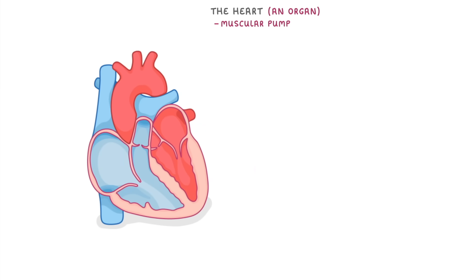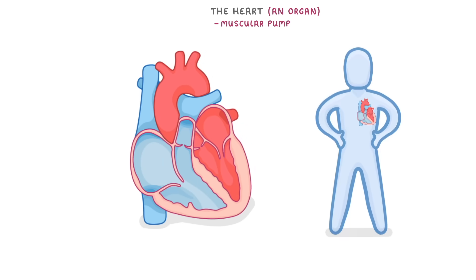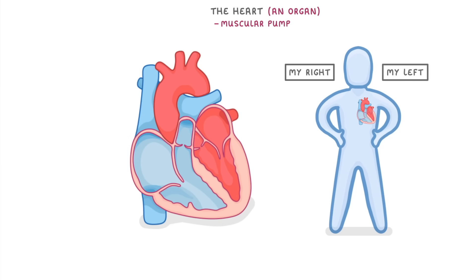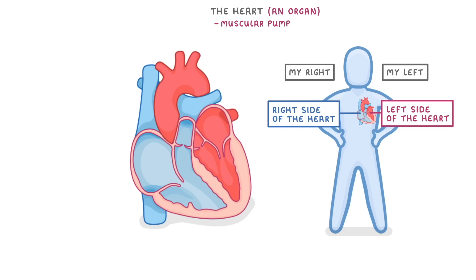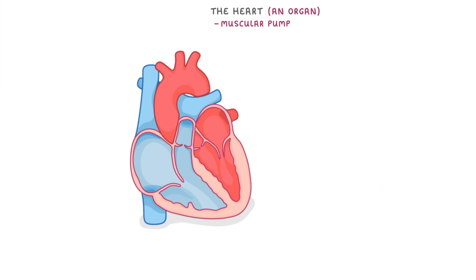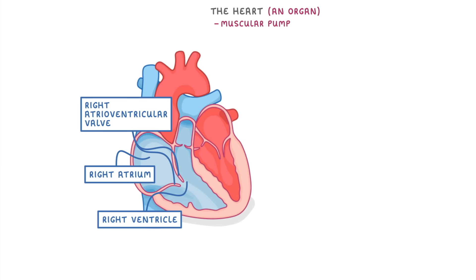Whenever you look at an image of the heart like this one, it's as if the heart belongs to another person who's looking at you front on. So when we label the left and right side of the heart, it's actually their left and their right that matters, not ours. This means that the left side of the heart is over here on our right, and the right side of the heart is over here on our left — so the left and right seem to be the wrong way around, but that's why.